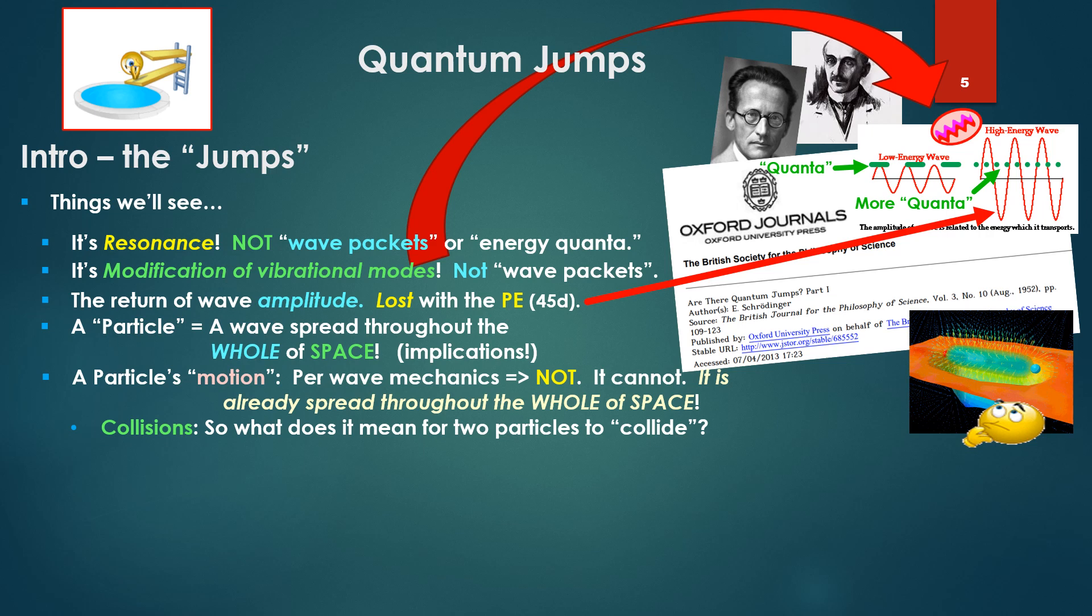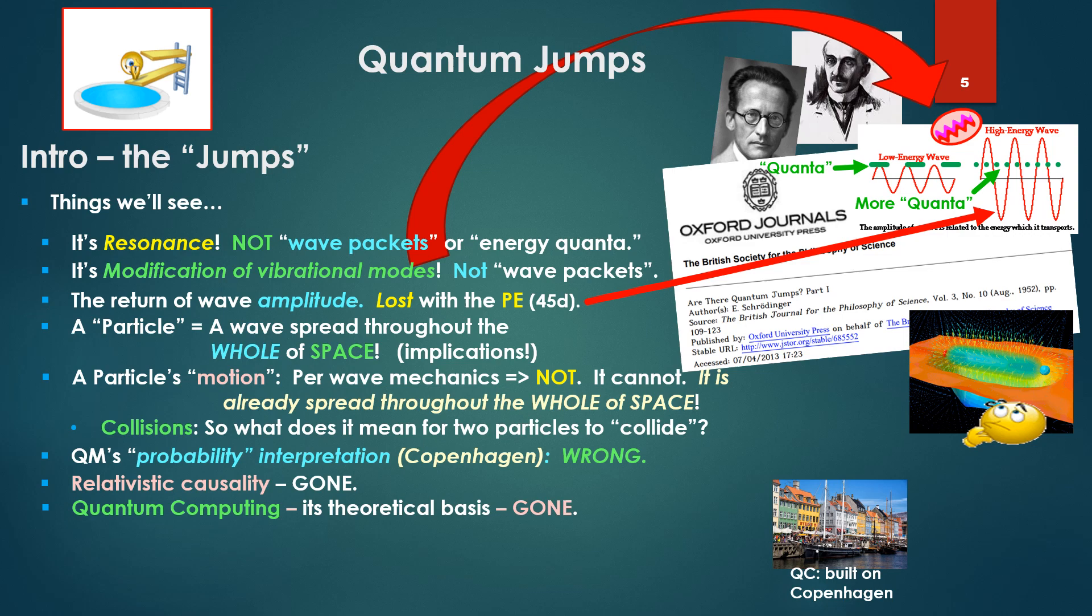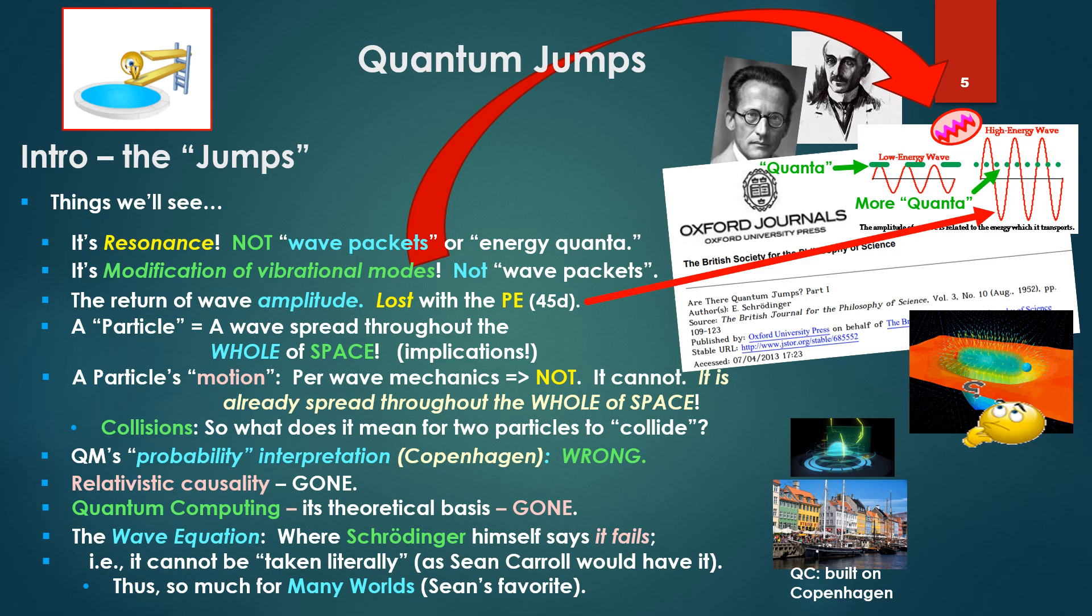Quantum mechanics probability interpretation, à la Copenhagen: wrong. Relativistic causality: gone. Look at the point. It spreads to the whole of space. Quantum computing, its theoretical basis, built entirely upon Copenhagen: gone.